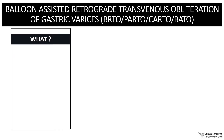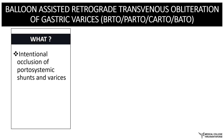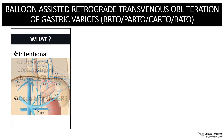These procedures involve the occlusion of portosystemic shunts in addition to the gastric varices that cause the bleed. This is generally done in patients who have a gastro-renal shunt in situ. The gastric varices have inflow from the inferior gastric vein, the posterior gastric vein, and the short gastric vein, all of which are branches related mainly with the splenic vein.